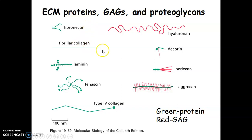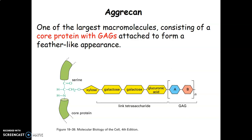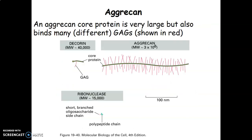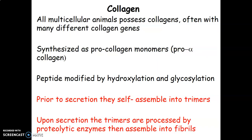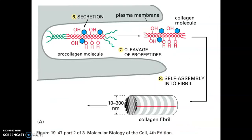Extracellular matrix proteins include fibronectin, fibrillin, laminin, tenascin, collagen, aggrecan, and hyaluronan. Hyaluronan contains glucuronic acid and N-acetylglucosamine; it attracts water and fills spaces between cells with non-compressible gel. Some cells can secrete hyaluronan to isolate themselves from other cells. Aggrecan consists of a core protein with glycosaminoglycans; the aggrecan protein is large but binds glycosaminoglycans. Collagen is a common fiber within the extracellular matrix.